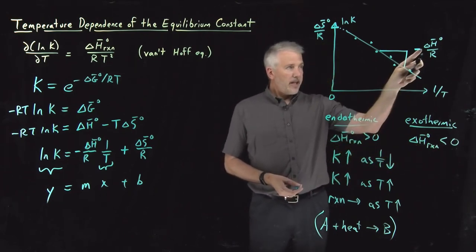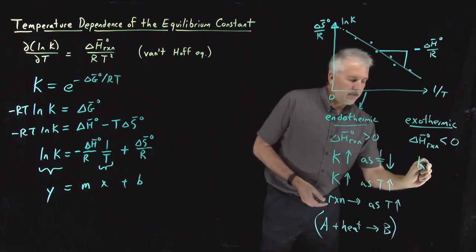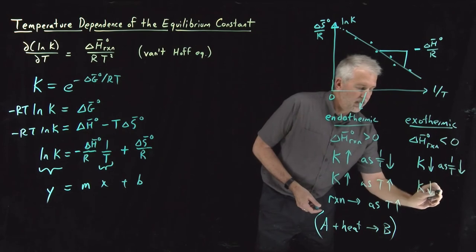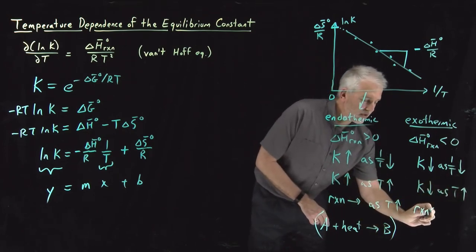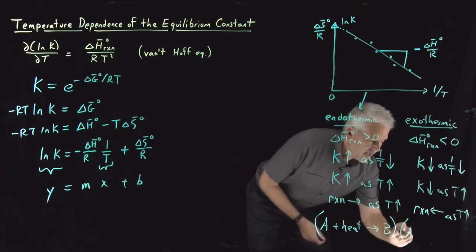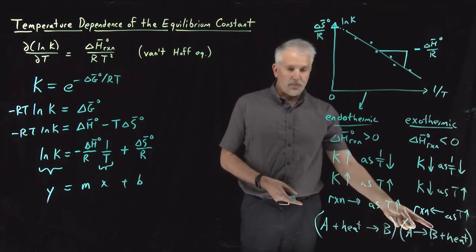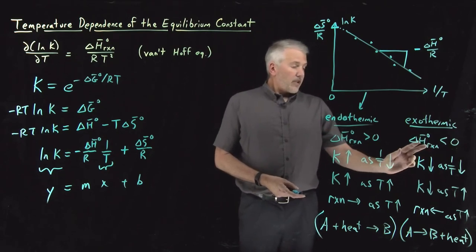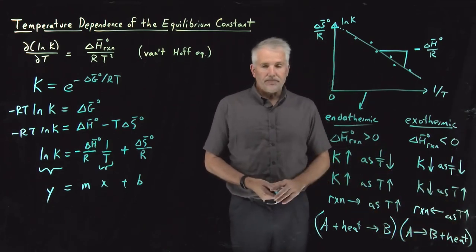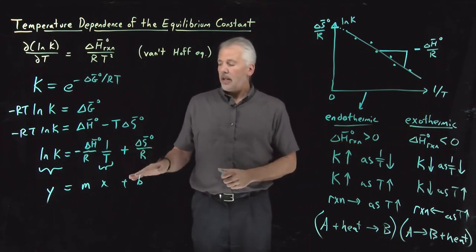For exothermic reactions, when ΔH is negative, negative ΔH is positive, so the graph has a positive slope rather than a negative slope. K goes down as 1/T goes down — that is, K decreases as temperature increases — so the reaction shifts backwards as temperature increases. Le Chatelier's mnemonic for an exothermic reaction: heat is a product, so adding temperature adds more product and drives the equilibrium backwards.